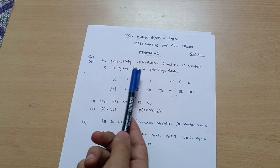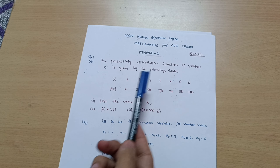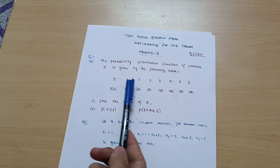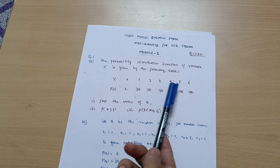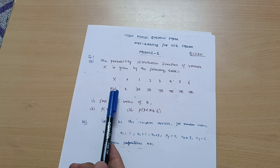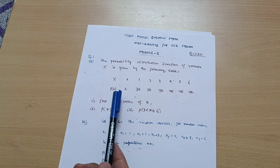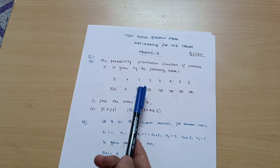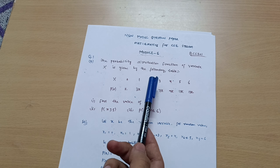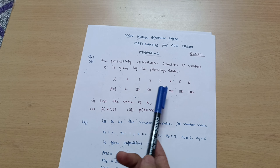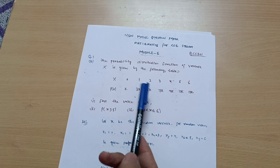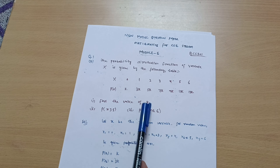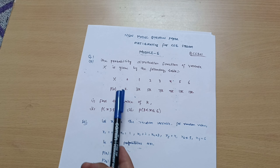This is the question: the probability distribution function of variate X is given by the following table. The X values are 0, 1, 2, 3, 4, 5, 6, and the respective probabilities are given — for 0 it is k, for 1 it is 3k, for 2 it is 5k, and so on. That is the given data.